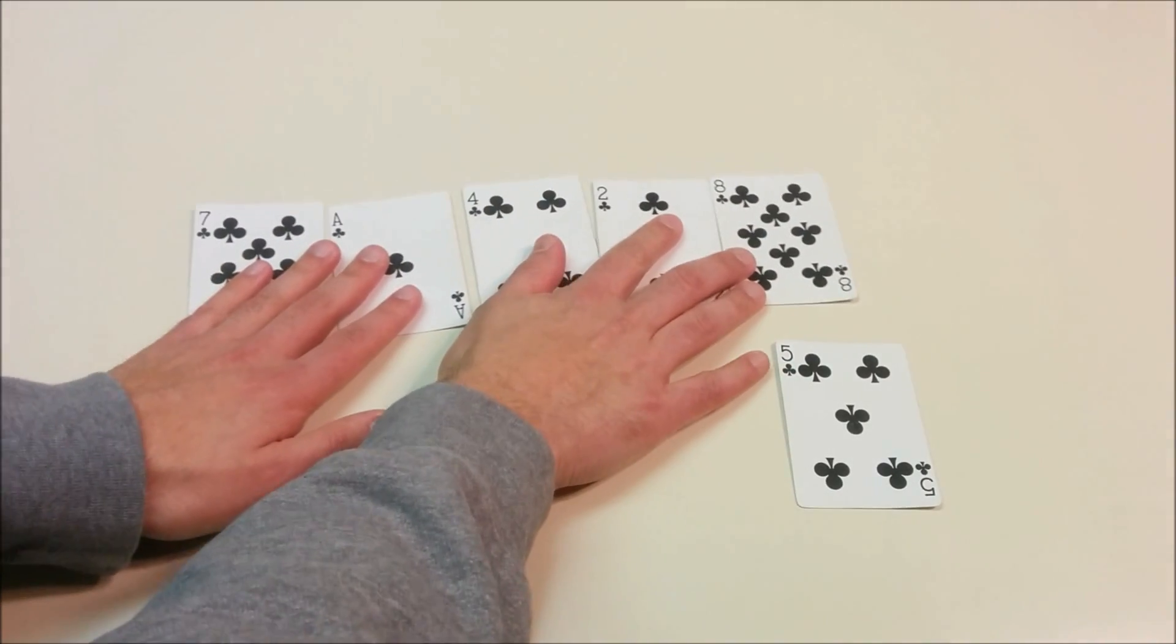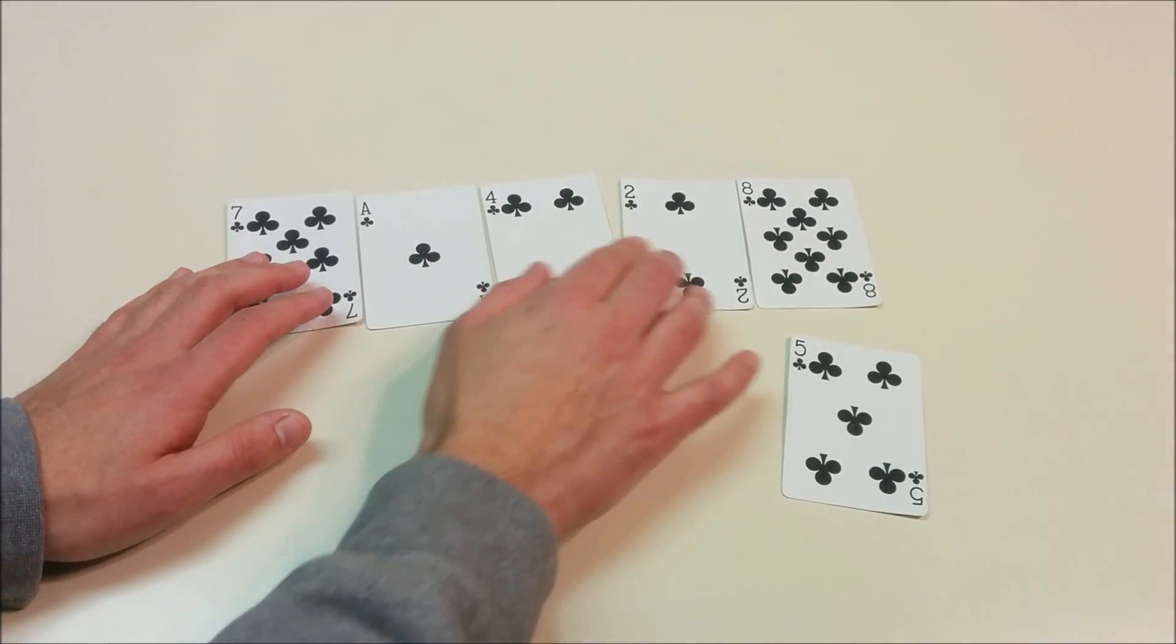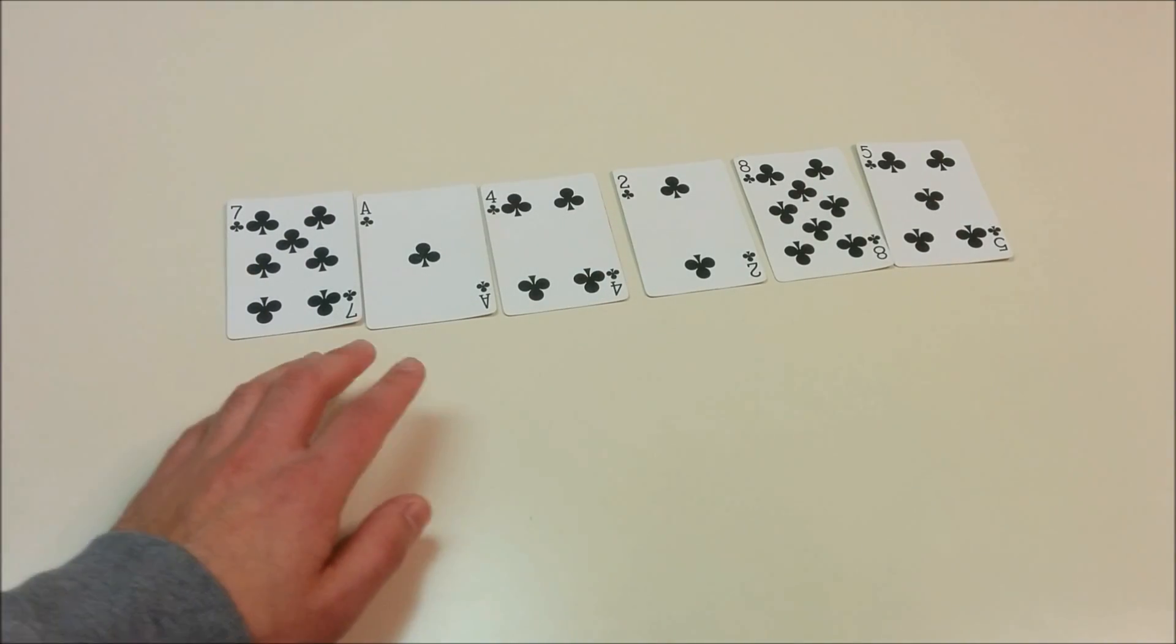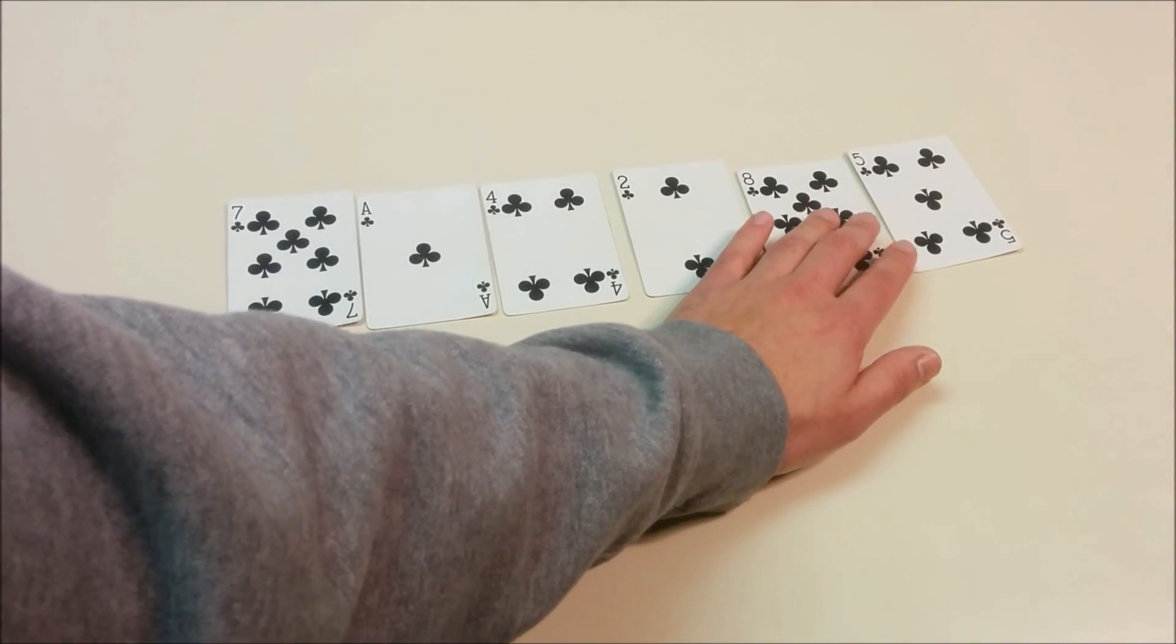We continue to get 5 over 7. It starts out with the 7. We go 7, 1, 4, 2, 8, 5, and the numbers will repeat in that order.